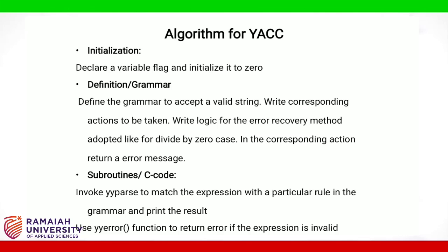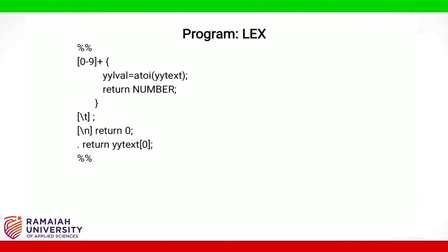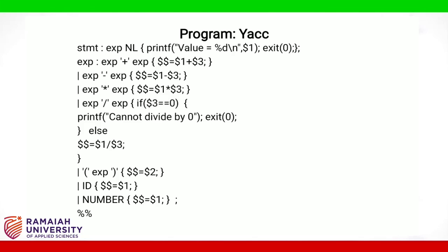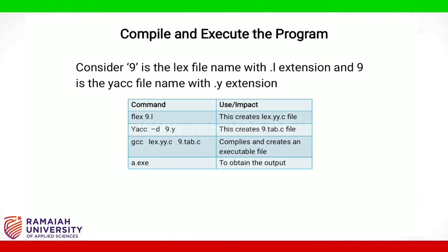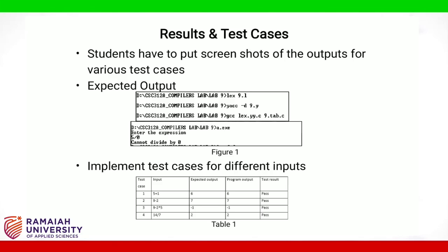Use the yyerror function to return an error if the expression is invalid. This is the regular expression section of the Lex program, and this is the grammar section of the Yacc program. Consider the Lex filename and Yacc filename to be 9 with .l extension and 9 with .y extension respectively. The table shows the commands used to execute the Lex and Yacc programs. Students have to put screenshots of the outputs for various test cases; the expected outputs are shown in figure 1 and the test cases for different inputs are shown in table 1.